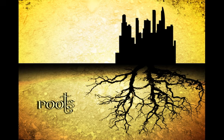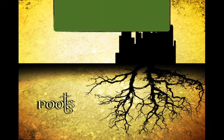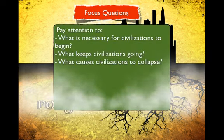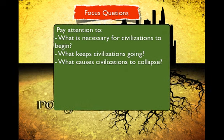This video is called The Components of Civilization. In this video we are going to be looking at the following things: first, what is necessary for a civilization to begin; second, what keeps civilizations going; and finally, what causes civilizations to collapse.